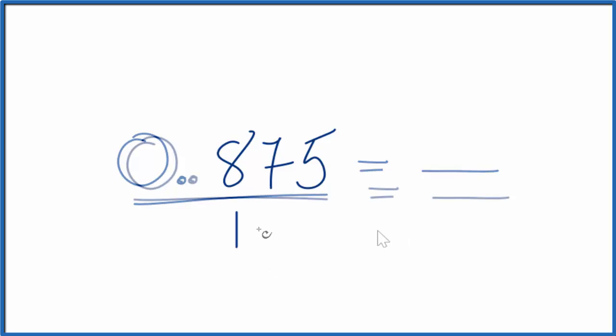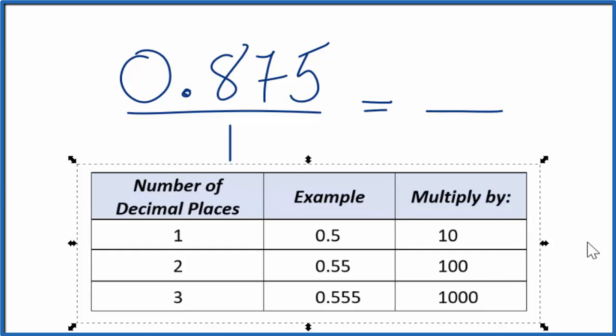Over 1, so we're just dividing by 1. We're not changing the quantity, just what it looks like, starting to look a little bit more like a fraction. When we have three decimal places, one, two, three, we're going to multiply.